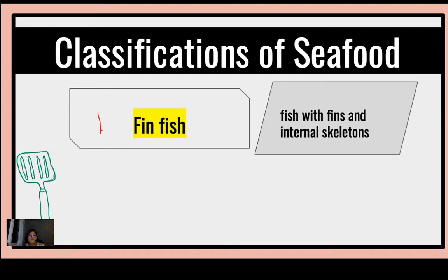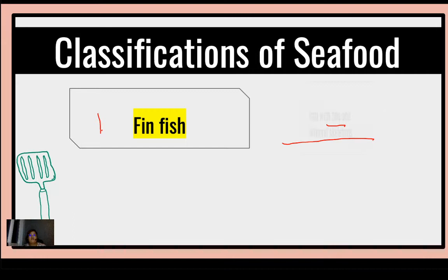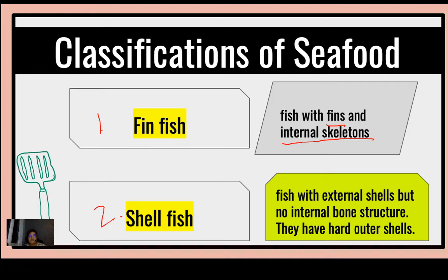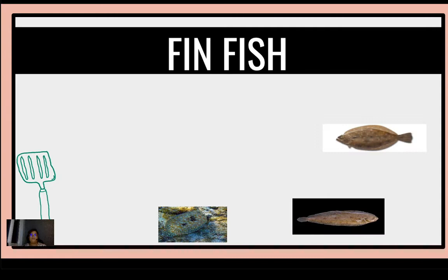When we talk about finfish, they have fins and they have internal skeletons. Number two, we have the shellfish. Shellfish has external shells — by the word itself, shellfish has external shells but they don't have any internal bone structure. They have outer shells.